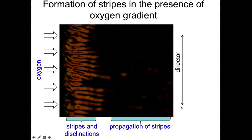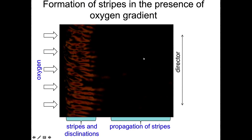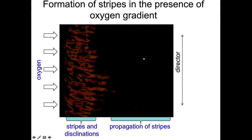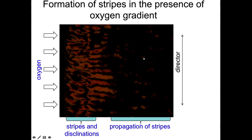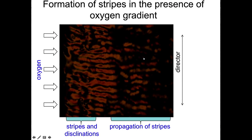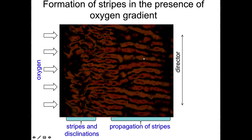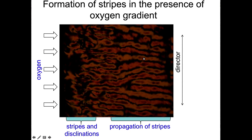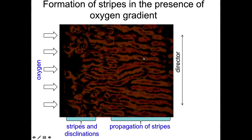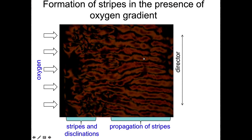But then we introduce oxygen to the system from the left side and bacteria start to swim. They start to interact and they create bending instability. And this bending instability can be observed using cross-polarized microscopy as stripes. And these stripes propagate to the right with the diffusion of oxygen.